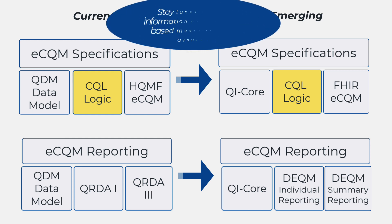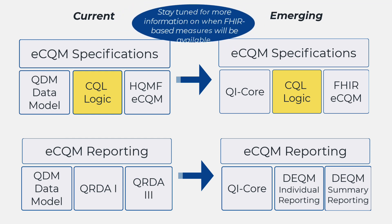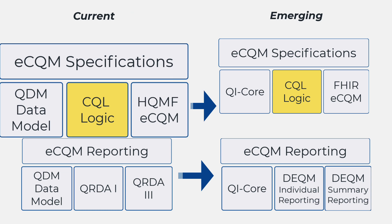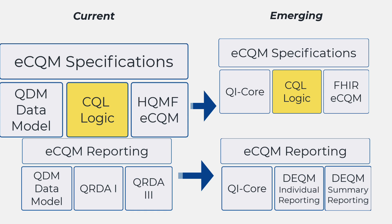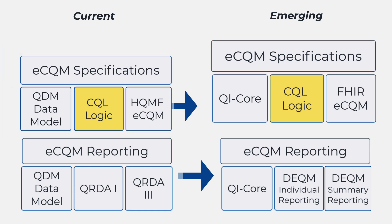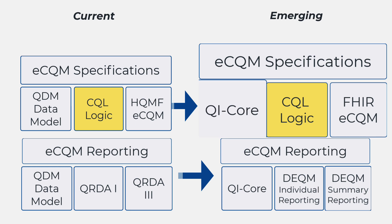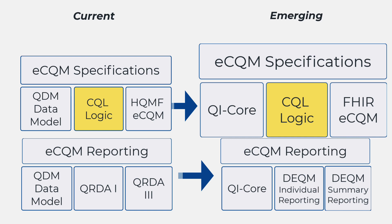This next image compares the current eCQM building blocks to those proposed for use in eCQMs that are expressed in FHIR. In the top left, you can see the current specifications contain the Quality Data Model or QDM for the data model, use Clinical Quality Language or CQL for expression logic, and Health Quality Measure Format or HQMF for structure. With the move to FHIR on the top right, you can see that QI Core replaces the Quality Data Model. QI Core is a FHIR implementation guide that profiles U.S. Core for use in Clinical Quality Improvement. FHIR measures would continue to use CQL for the expression logic.